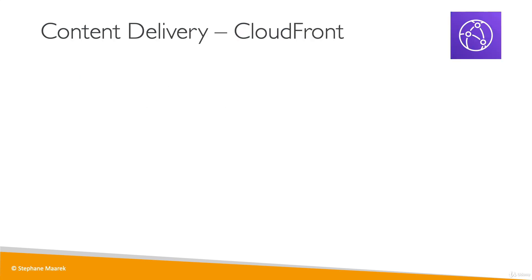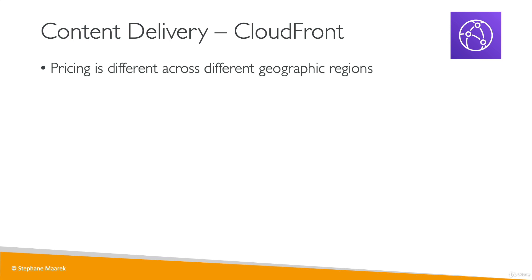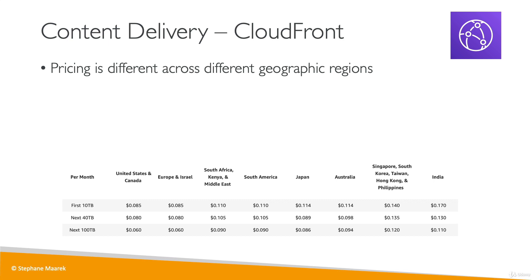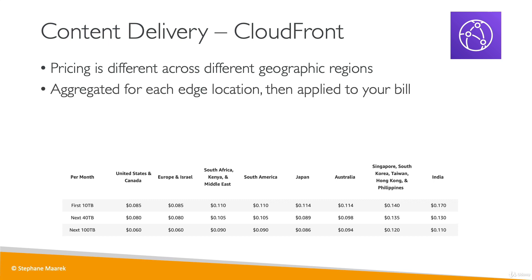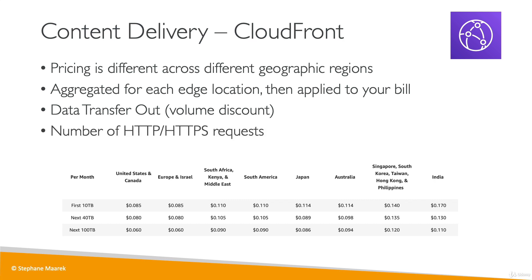CloudFront is a global CDN, so pricing differs based on where content is served from — typically by continent such as America, Europe, South America, Japan, Australia, and India. The more you use CloudFront at a specific edge location, the more discounts you get, and you receive an aggregated bill across all edge locations. You pay for data transfer out of CloudFront, but not for data transfer in, which is always free. You also pay based on the number of requests made into CloudFront.